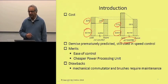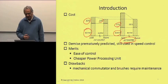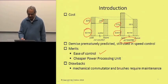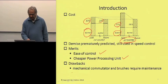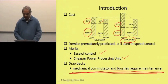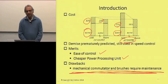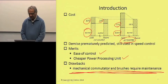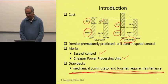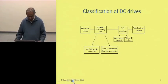DC machines are still used in speed control and they are still manufactured. There are certain merits in DC machines: one is ease of control and a cheaper power processing unit. The major drawback is that we have a mechanical commutator and brushes, which requires maintenance. The reason for us to study DC machines is that we try to emulate the performance of AC machines to match that of DC machines, so it is important to understand how DC machines work and what their functional operating characteristics are.